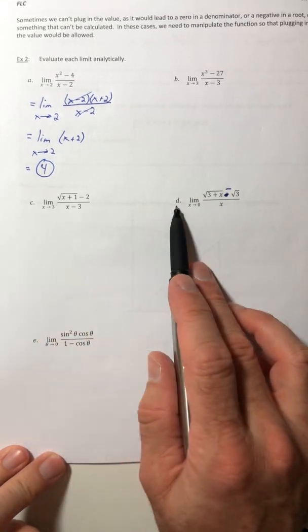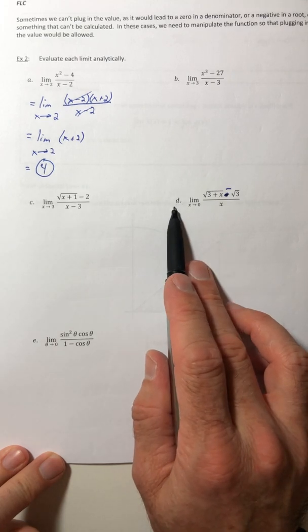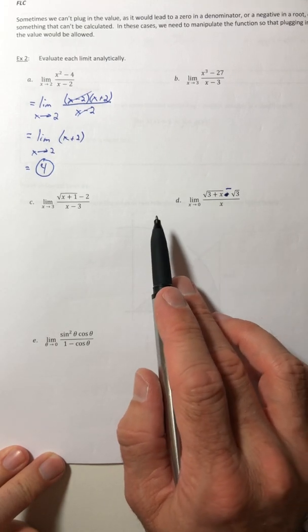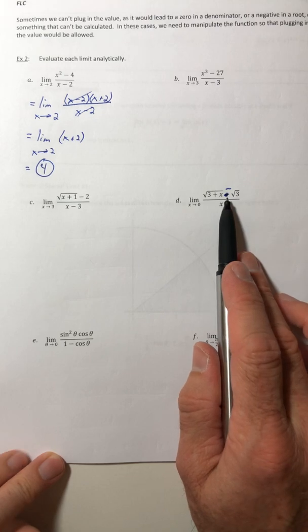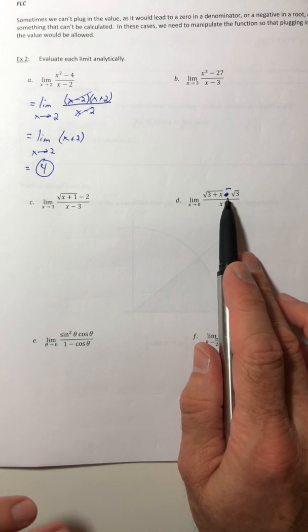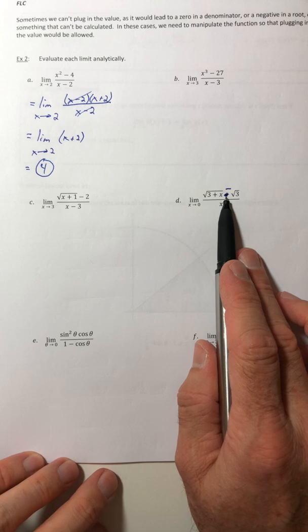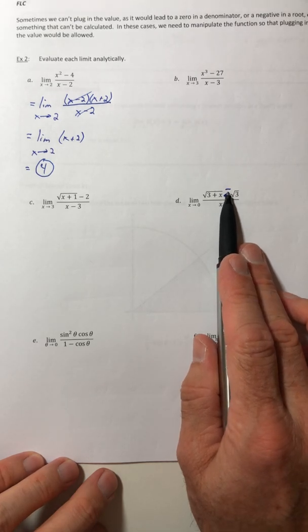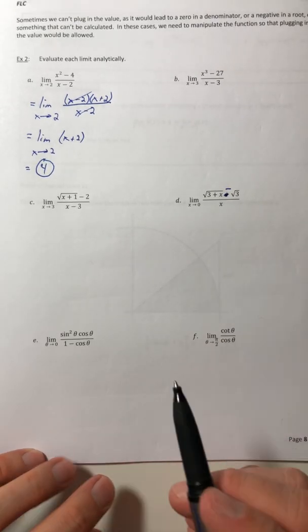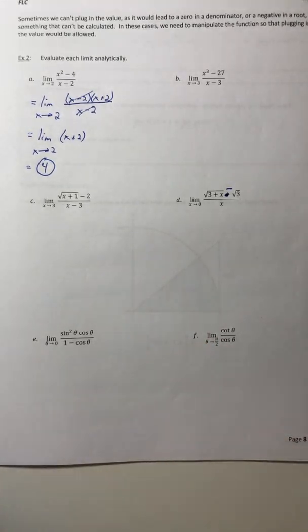So we're going to do part C. For part D, you can look at the answer key for that one. If I don't get it fixed in the actual document, just keep in mind that that plus sign should have been a minus. There's a little typo. My bad. All right.